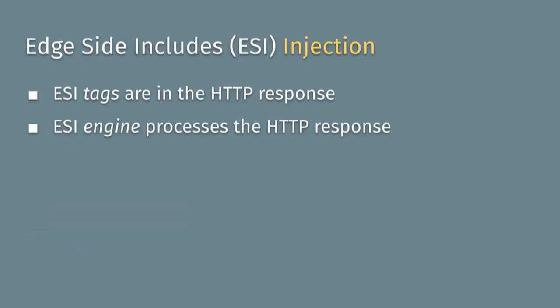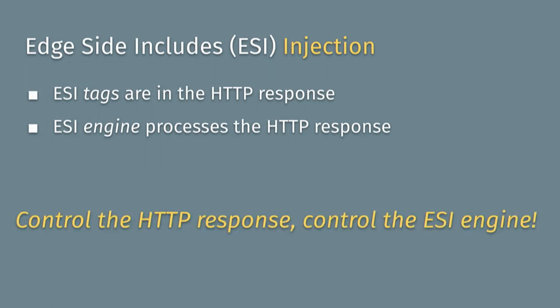Two facts set the mood for ESI injection: ESI tags are inside the HTTP response, and the ESI engine parses that response to find and execute them. This means if you control the HTTP response, you control the ESI engine — the cache. It's not unlike XSS, where controlling the HTTP response lets you control the browser via JavaScript and HTML — but now you're controlling a cache server, which has far more impact because you're controlling everyone's cache.